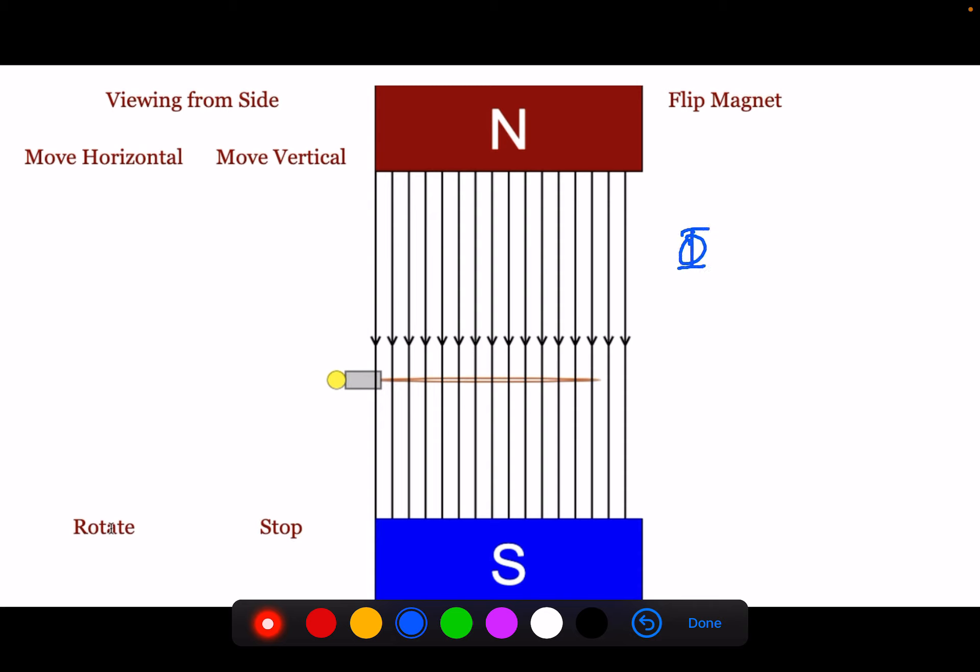So again, flux is magnetic field times area. If you change either one of them, that will give you a change in flux, and that will give you electricity.